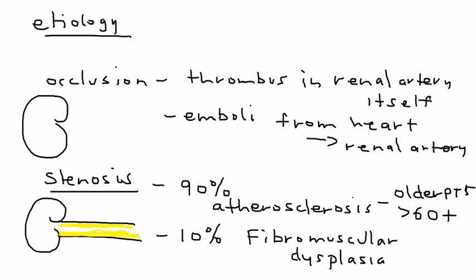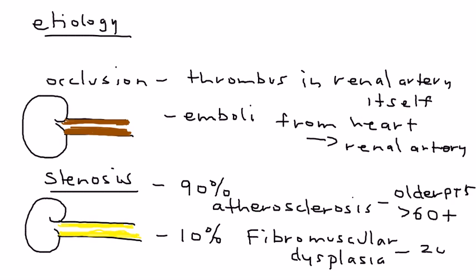What's fibromuscular dysplasia? Using the color brown to represent the wall of the artery, fibromuscular dysplasia is essentially thickening of that wall, and as a result, you get stenosis from the thickening. On clinical vignettes, pay close attention to the age of the patient — people in their 20s, young people, get this, and it's female greater than male, two to one.